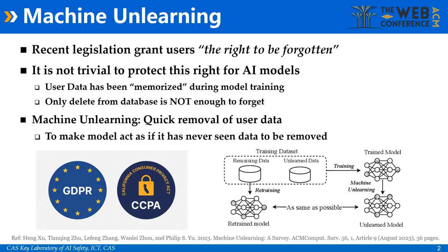To address these concerns, recent legislations like the EU's General Data Protection Regulation and the California Consumer Privacy Act have granted individuals the right to be forgotten, enabling them to request elimination of their private data from online platforms. Consequently, machine unlearning has emerged, allowing quick and efficient removal of specific data from a trained model.